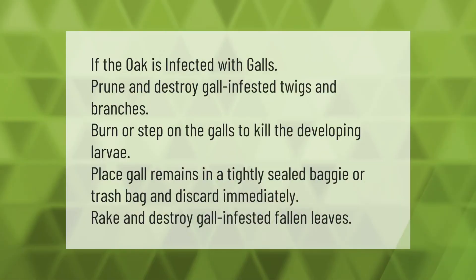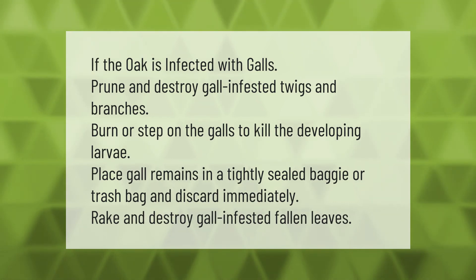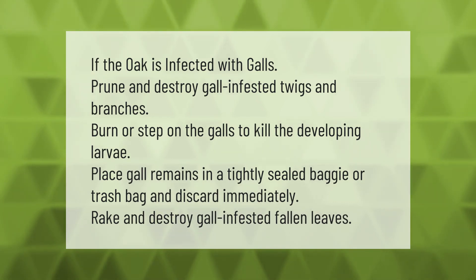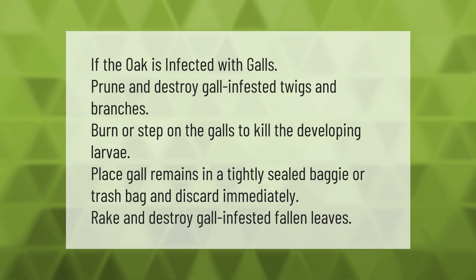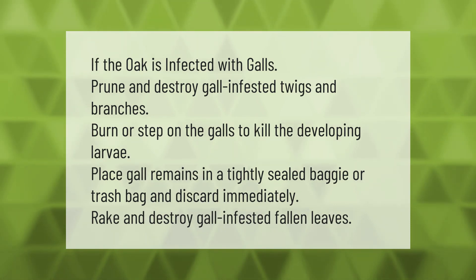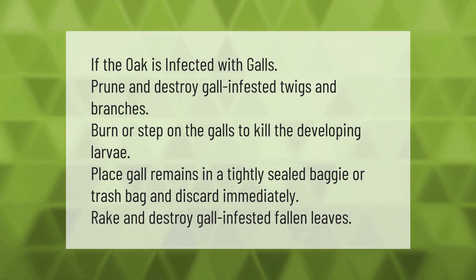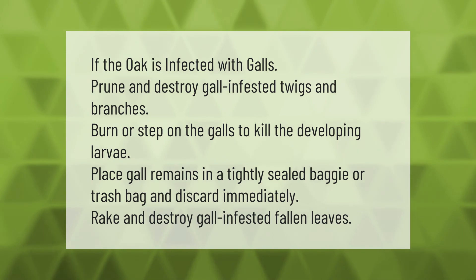If the oak is infected with galls, prune and destroy gall-infested twigs and branches. Burn or step on the galls to kill the developing larvae. Place gall remains in a tightly sealed bag and discard immediately. Rake and destroy gall-infested fallen leaves.